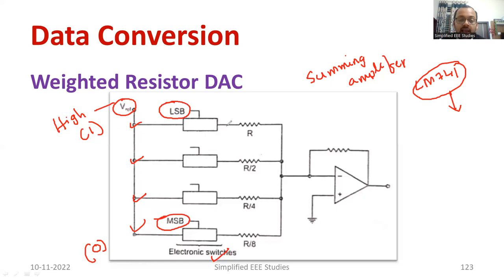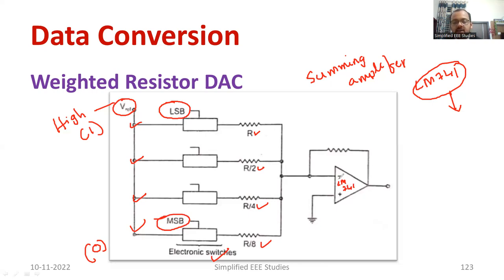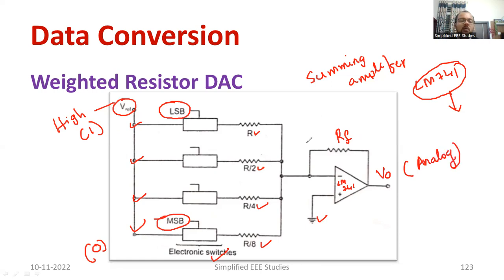The output of the electronic switches is connected to resistors. On the LSB side, the resistor starts at R. Going to the next level, it is R/2, then R/4, then R/8 — each stage divides by two. The output of each bit is given to the inverting terminal of the op-amp (LM741). There is a feedback resistor RF, and the non-inverting terminal is connected to ground. This configuration acts as a summing amplifier, and the output will be analog. This method is called the weighted resistor DAC.